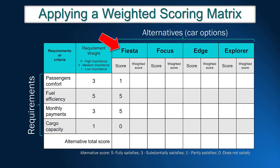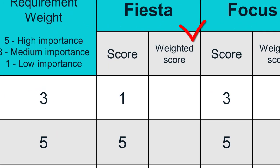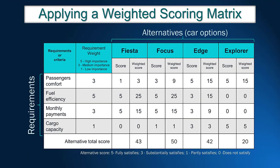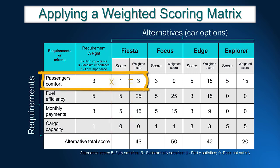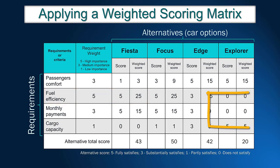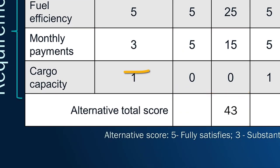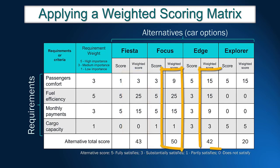After finishing the scoring for the Fiesta alternative, John needs to give scores for the remaining models. Once the scoring for all alternatives is finished, it is time to calculate the weighted score. The weighted score is calculated by multiplying the alternative score by the requirement weight. For instance, in terms of passenger comfort, model Fiesta received score 1, so the weighted score will be 3 times 1, that is 3. For full efficiency, the weighted score is 5 times 5, that comes to 25. After calculating all weighted scores for the alternative, the total weighted score is obtained by adding up the weighted score for each requirement. For the alternative Fiesta, the weighted score is 3 plus 25 plus 15 plus 0, that comes to 43. Now we can repeat the calculation for the remaining alternatives.